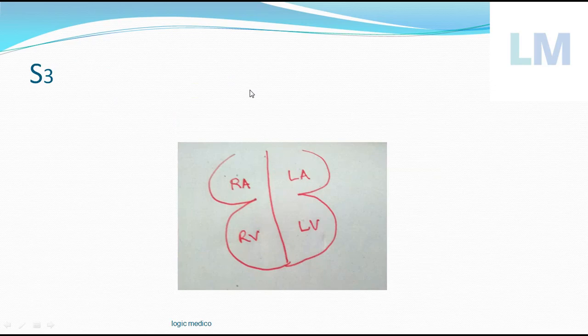In summary: S1 is due to the closure of AV valves - atrioventricular valves. S2 is due to the closure of semilunar valves. Coming to S3 - is it present in every individual? No.